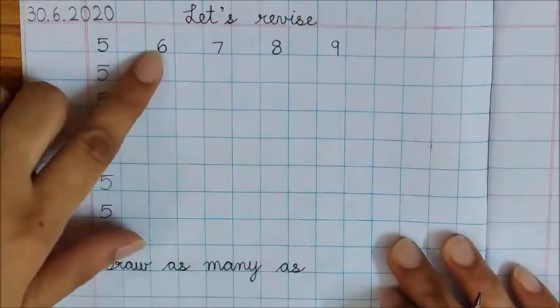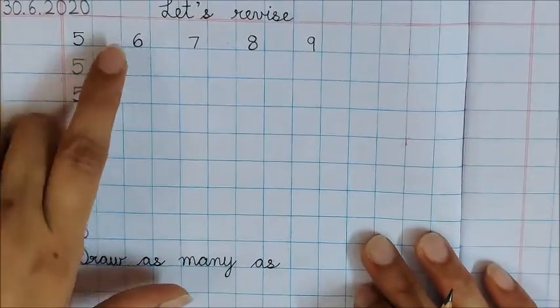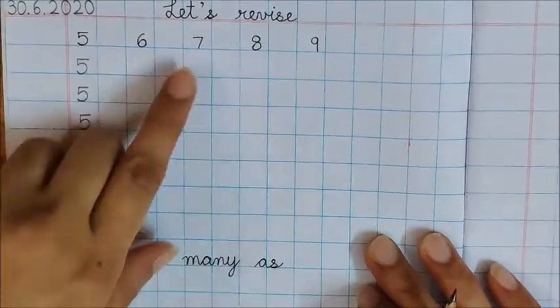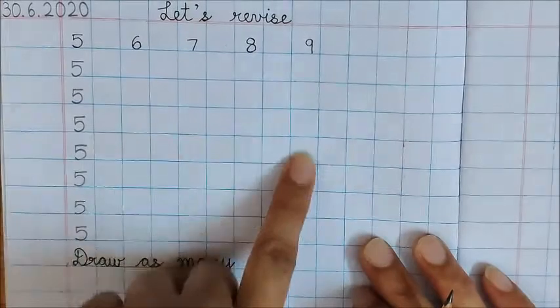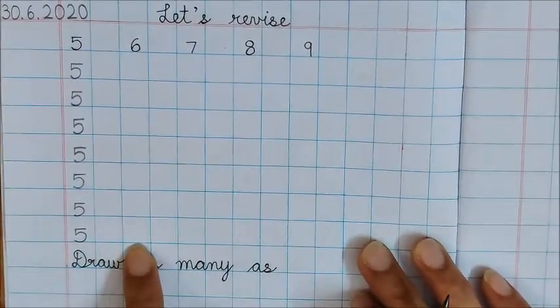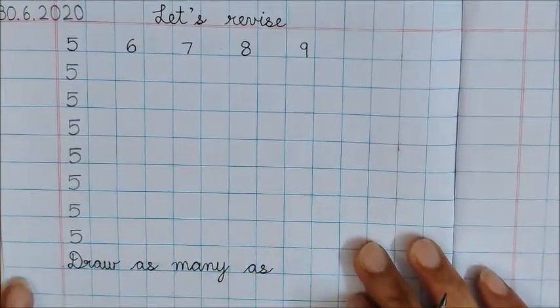You will write number 6. Below this number only children don't write number 6 here. Below this number only you will write 6, 7, 8, and 9. You have to do writing only till here.